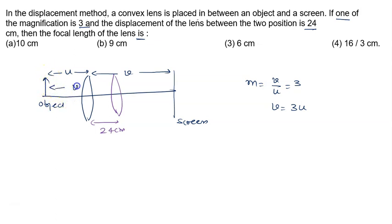When the lens is shifted, this position will be V and this will be U. So this distance is V and this distance is U. We can write V minus U is given to us as 24 cm.